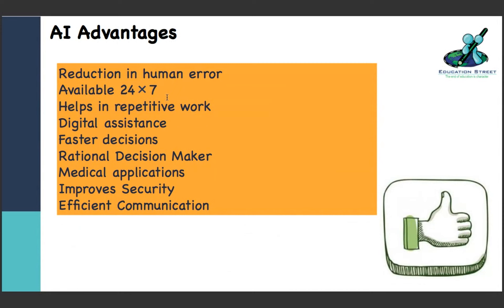Faster decisions - humans take a good amount of time to analyze and there's a lot of chaos because there are many stakeholders around us. But if given to machines, they can take decisions faster. That's exactly where AI brings in that possibility. Rational - of course they're rational. There is no emotion behind it, no one playing mind games, so they're very rational.